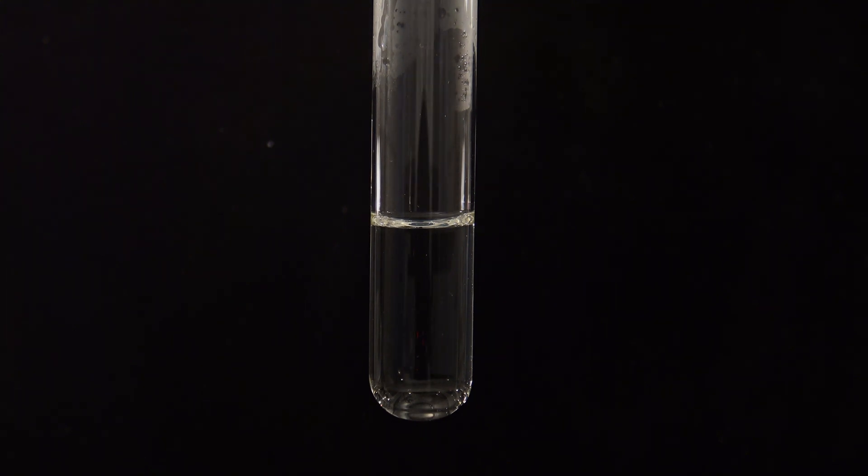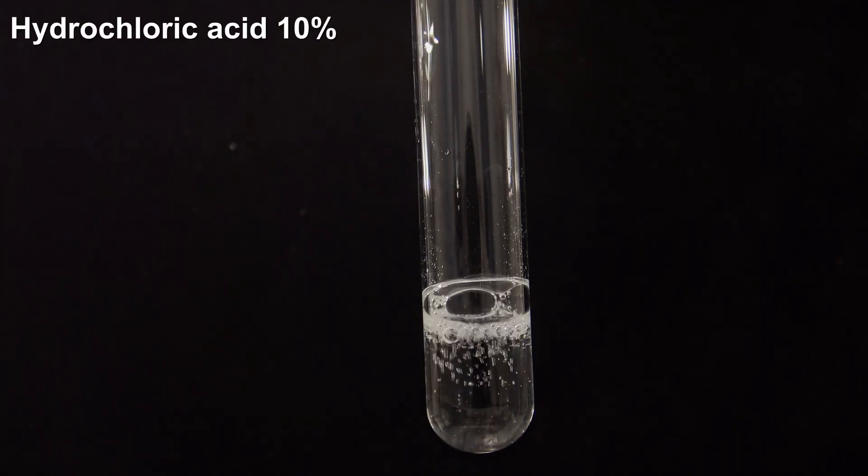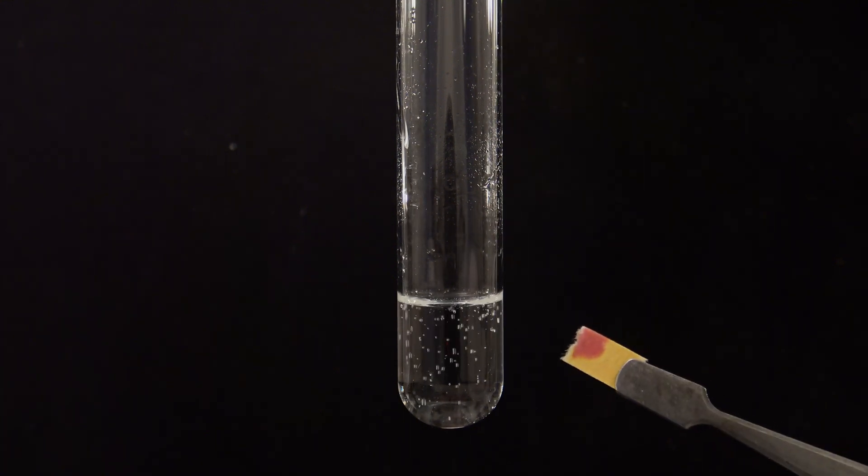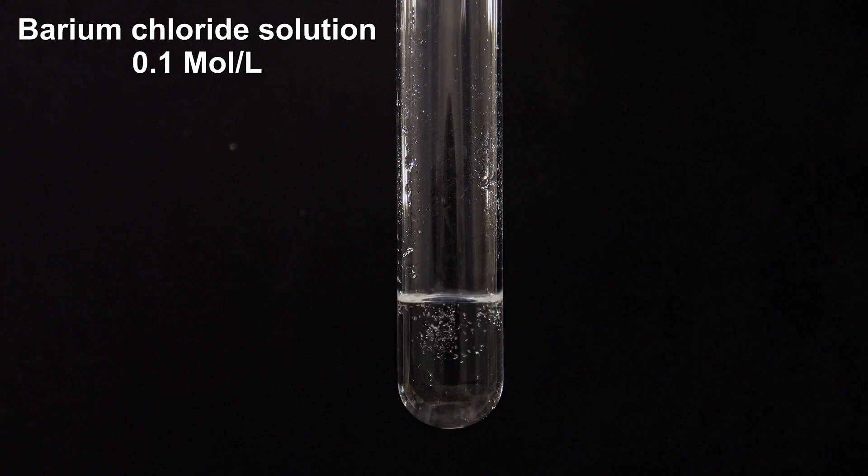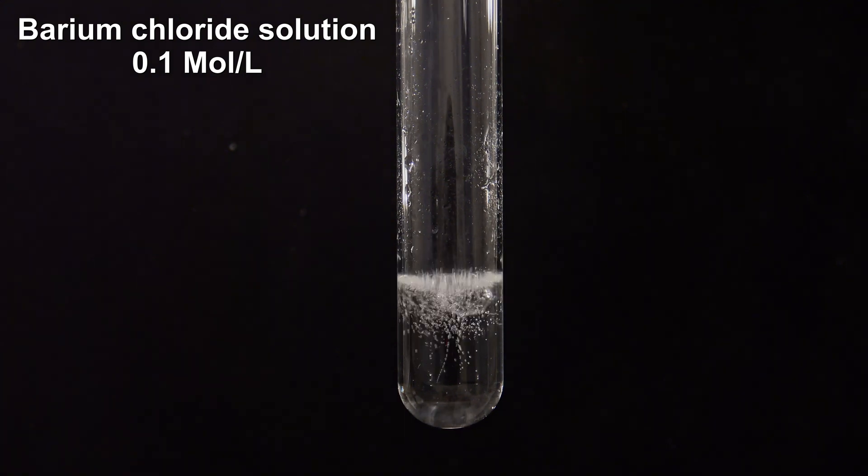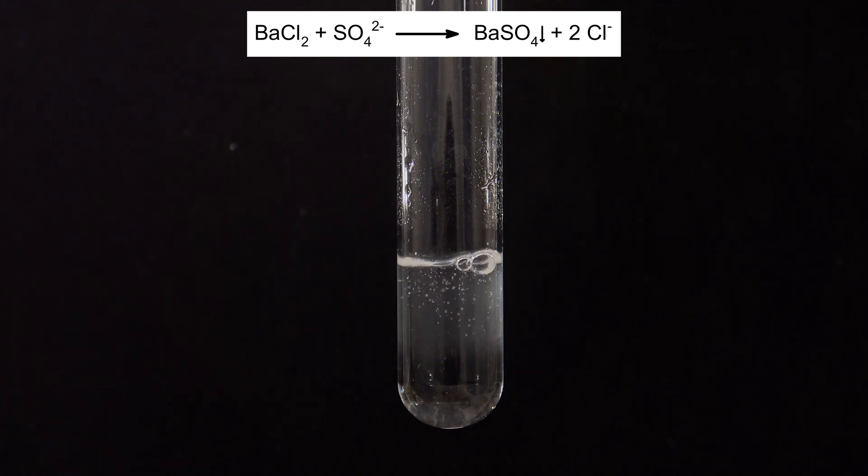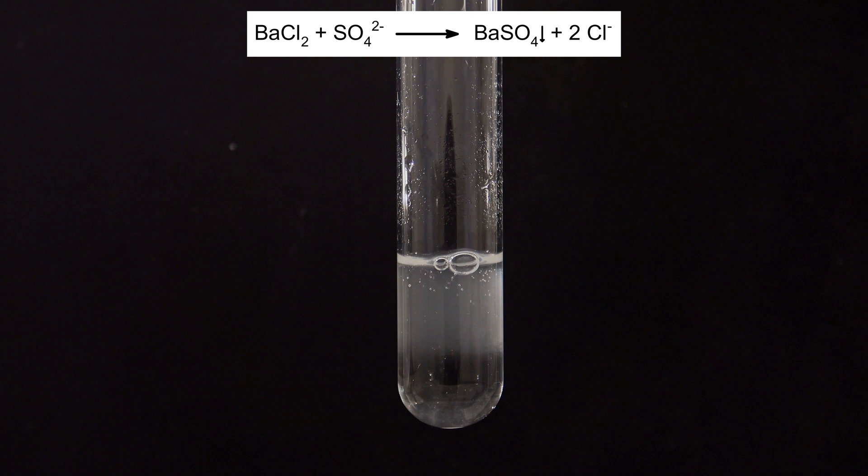Next, a sample of the soda extract was acidified with 10% hydrochloric acid. Then, a 0.1 molar solution of barium chloride was added. The barium chloride reacts with sulfate ions to form insoluble barium sulfate, which is a proof for the presence of sulfate in the sample.